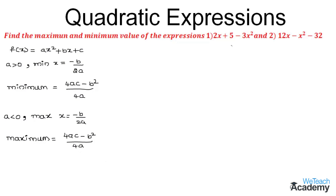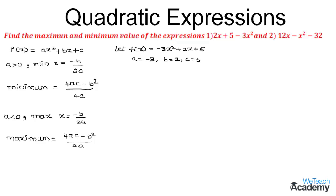Now let us proceed and solve the given expressions. First, let us consider the given expression as f(x). By writing this expression in the standard form we get -3x² + 2x + 5. On comparing this with ax² + bx + c, we get the values of a as -3, b as 2, and c as 5. We observe that the coefficient of x², which is -3, is less than 0.